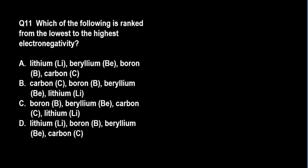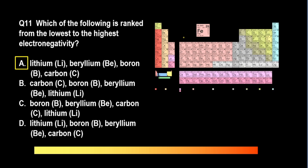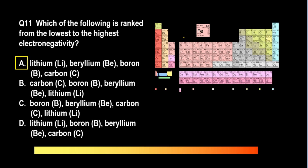Which of the following is ranked from the lowest to the highest electronegativity? A. Lithium, beryllium, boron, and carbon. B. Carbon, boron, beryllium, and lithium. C. Boron, beryllium, carbon, and lithium. D. Lithium, boron, beryllium, and carbon. The correct answer is A. Again, fluorine has the highest electronegativity — the closer the element is to fluorine, the more electronegative it is. In this case, carbon is the nearest, followed by boron, beryllium, and lithium. Thus, carbon is the most electronegative and lithium is the least electronegative.